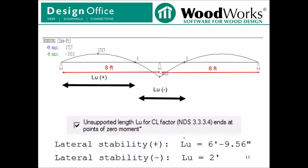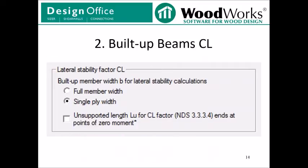Now, looking at the same example, but now we will toggle the unsupported length LU for CL factor ends at points of zero moment feature. You will notice a difference in the LU for positive and negative bending. In the case of the positive bending, the member length LU is taken as the distance between the end support and the point of zero moment along the length of the first span. Then, for the negative bending, the length LU is taken as the length between zero moments for the negative side of the bending moment diagram. So in this case, it would be 2 feet. This feature is not toggled by default, but if you want to utilize the feature, all you need to do is toggle the feature in the settings design tab.